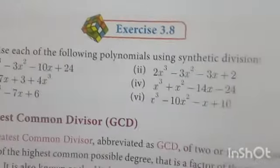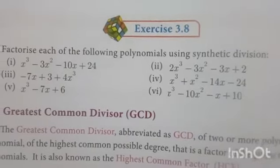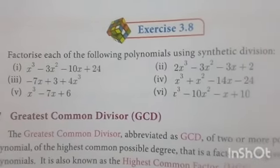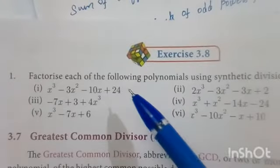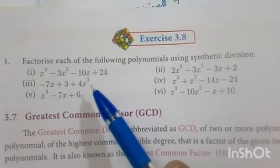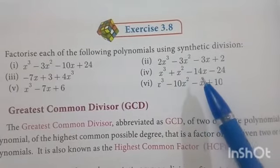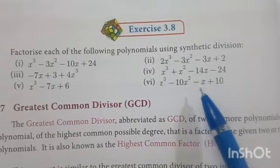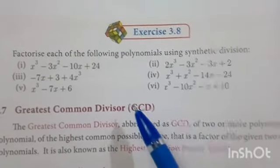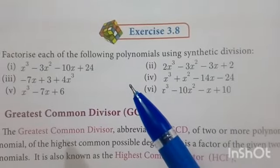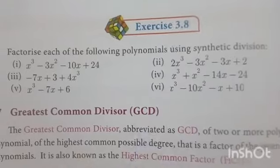In the previous video you learned synthetic division in exercise 3.7 where the factor is given. For this exercise we have to find the factors using synthetic division. The problems are: first, x³ minus 3x² minus 10x plus 24; second, 2x³ minus 3x² minus 3x plus 2; third, minus 7x plus 3 plus 4x³; fourth, x³ plus x² minus 14x minus 24; fifth, x³ minus 7x plus 6; sixth, x³ minus 10x² minus x plus 10. First, you have to check if all the given expressions are in standard form. If not, rewrite them in standard form, then apply the synthetic division method.